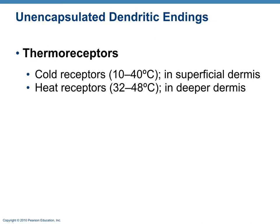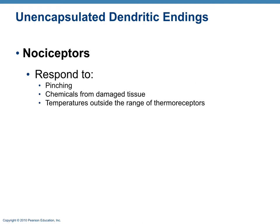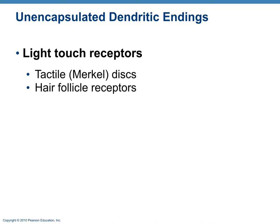Unencapsulated dendritic endings include thermoreceptors — cold receptors, which are more superficial in the dermis, and heat receptors, which are deeper. Nociceptors are also in this category, responding to pain from pinching, chemicals from damaged tissue, and extreme temperatures. Light touch receptors such as Merkel discs and hair follicle receptors also fall under this category.